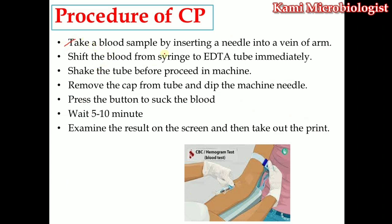To perform this test, first you take blood by inserting the syringe needle into the vein of the arm. First palpate the specific area where you want to take blood, and once you find the vein, clean that area using spirit, alcohol, or ethanol. After that, insert the syringe at a 15-degree angle. Once you take the blood, shift it into the EDTA tube immediately, before the blood clots, otherwise we cannot perform the complete blood picture.